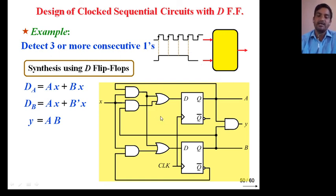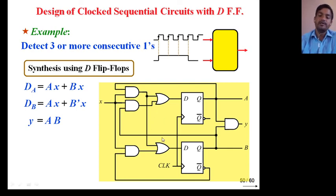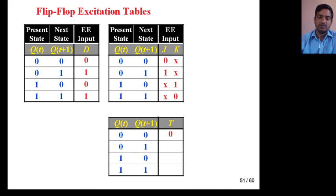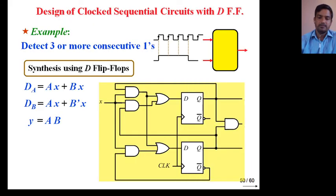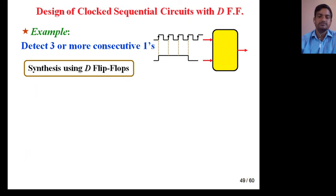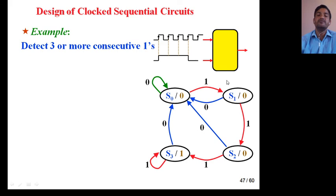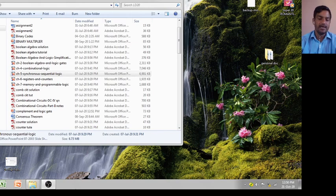Previously, we were given a circuit and determined the state diagram and state table. Now, given a state diagram, we designed the clocked sequential circuit — this is the reverse process. For practice, analyze the given circuit and you will get the same state diagram back. You can practice all four questions from my earlier videos. Thank you so much for watching, have a nice day.